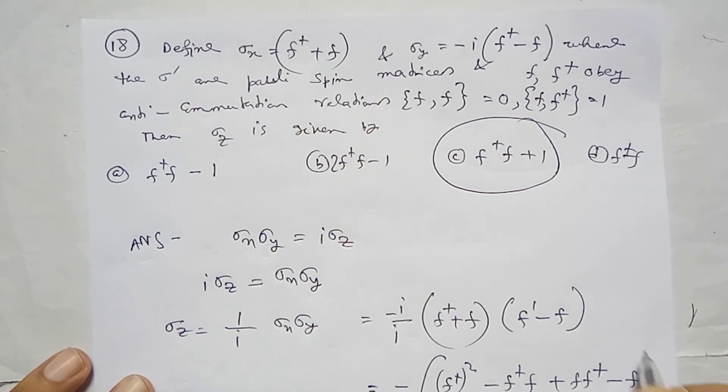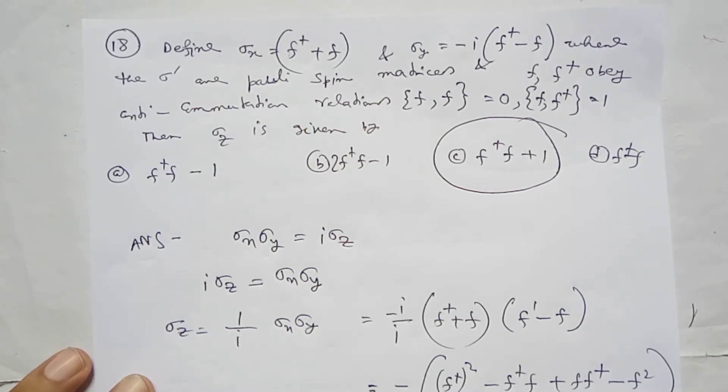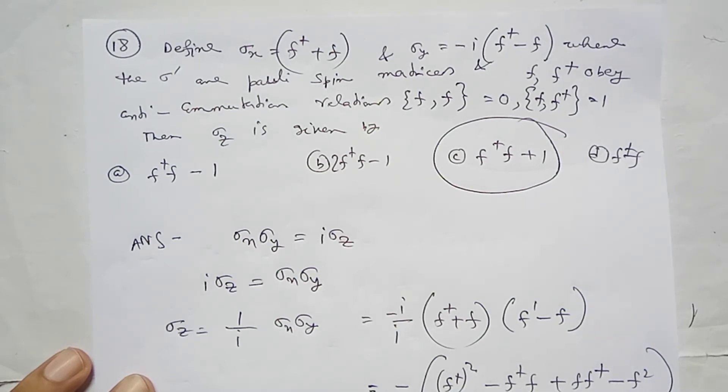Which simplifies using the anti-commutator to minus f dagger squared plus 1 minus f dagger i f, giving 1 minus f dagger i f.